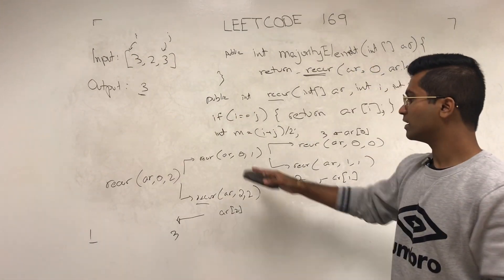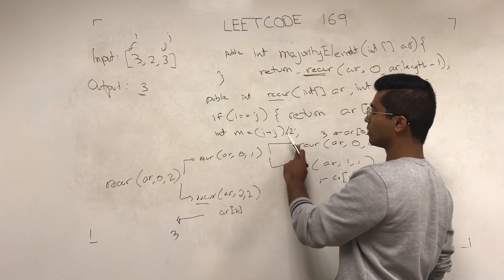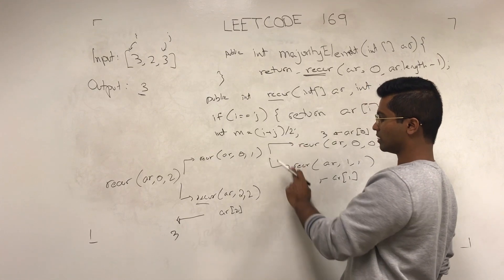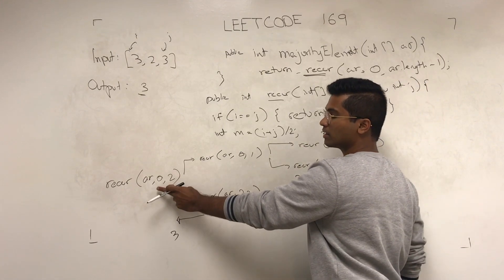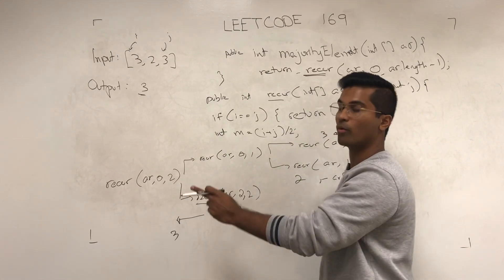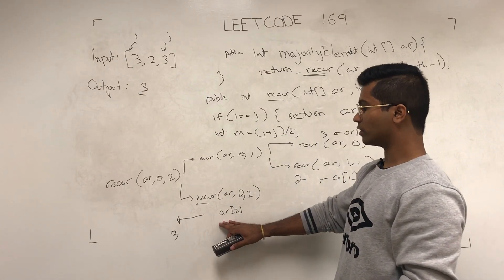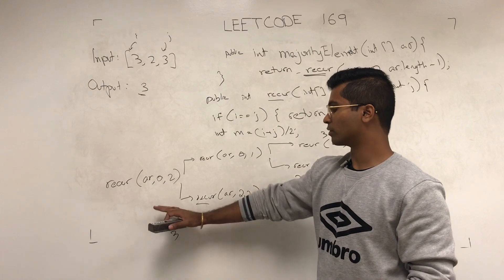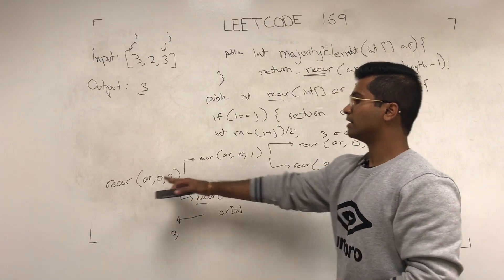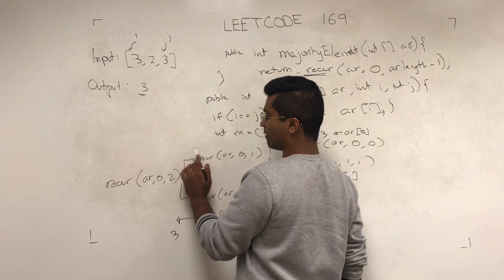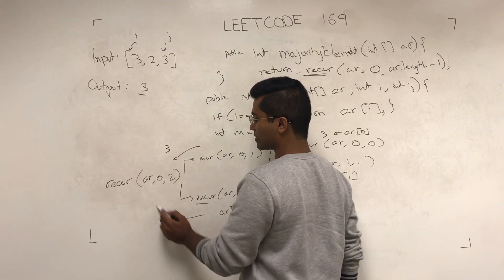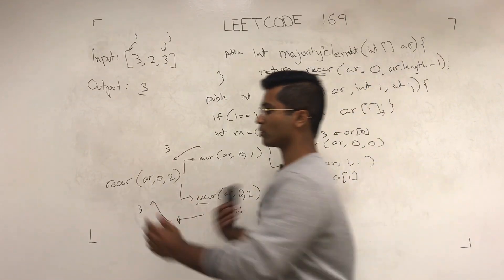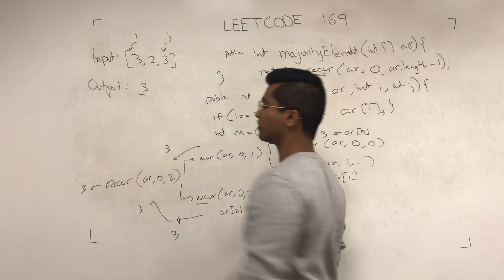So recur is going to count how many threes there are and how many twos there are. This recur is going to count how many threes and how many twos there are, and he's going to give whichever one is occurring more. That's what two technically should be doing, but it hits the base case and he's going to return three. And then he's going to notice that hey, my first recur is giving me three back and the second recur is giving me three back, so the answer we're looking for is going to be three, which is the output.